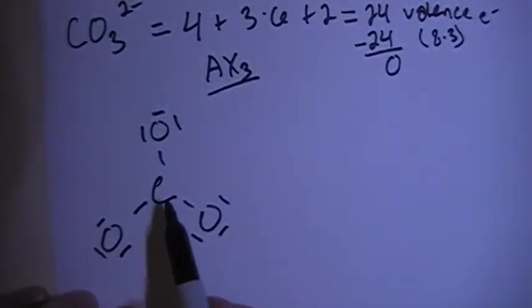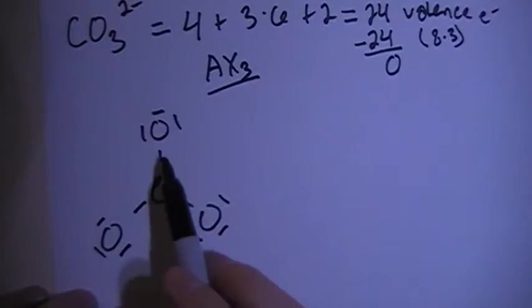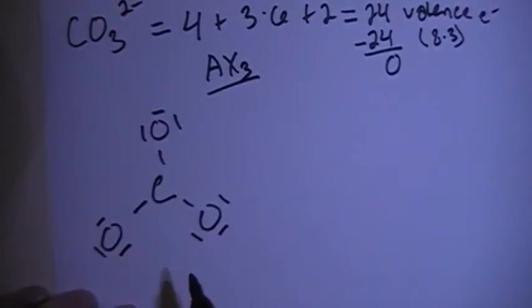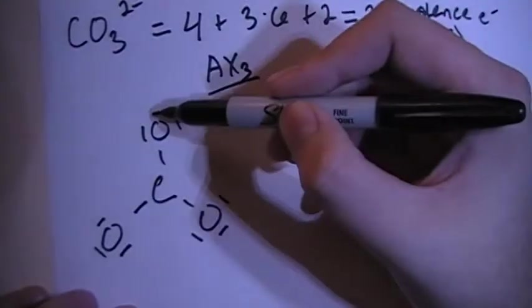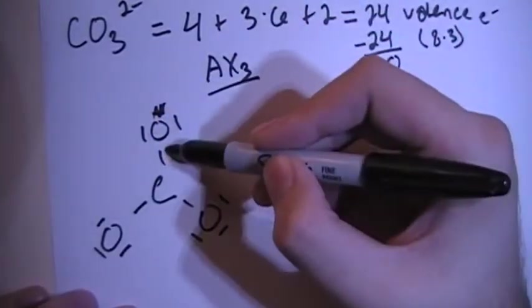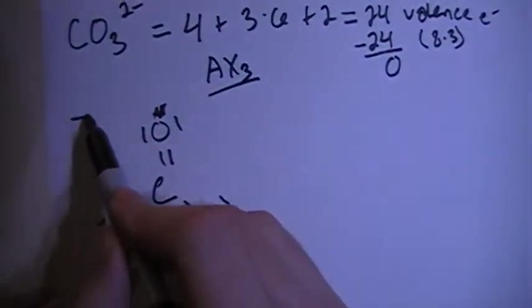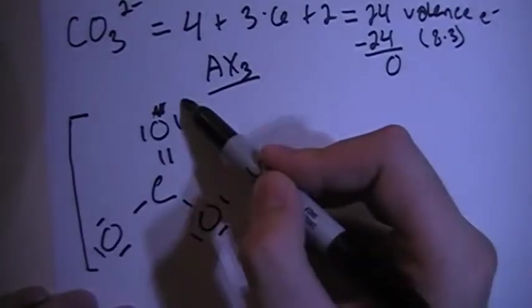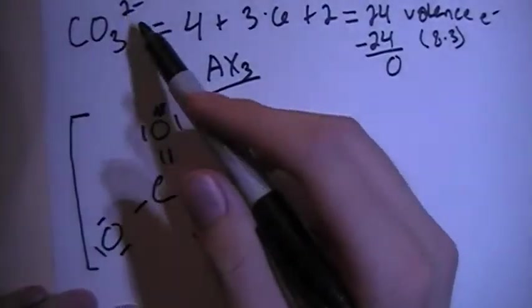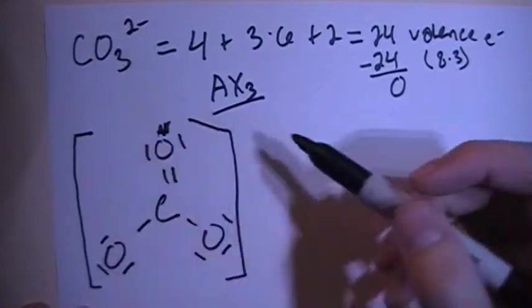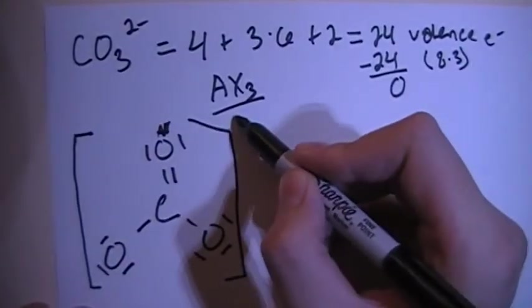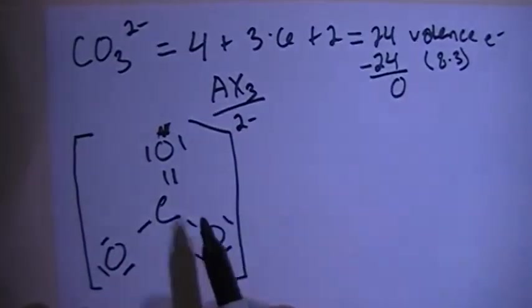But if you notice, the carbon does not follow the octet rule. There's only 6 electrons here when there needs to be 8, so what we're going to end up doing is moving one of these pairs and making a double bond. And don't forget to also add in your braces, because it's an ion, it's got a charge, a charged particle, so you have to put in the braces, the brackets, and then put the charge up top.